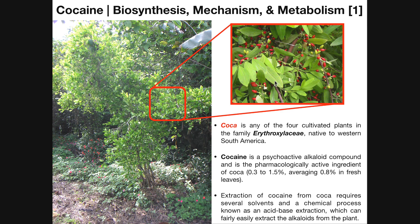The cocaine itself can be isolated from the leaf, and that requires an acid-base extraction process. Although, as we're going to see later in this video, in some cultures they don't actually isolate the cocaine — they actually will drink this like an herbal tea. I'll show you a picture of that in a few minutes.